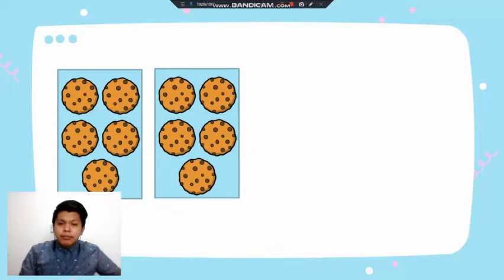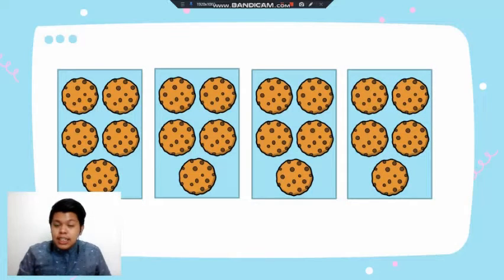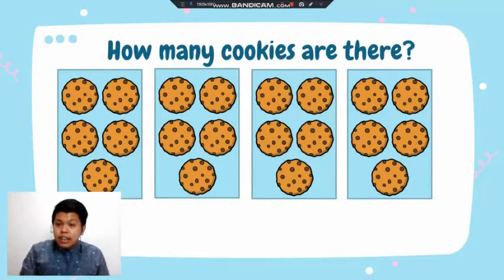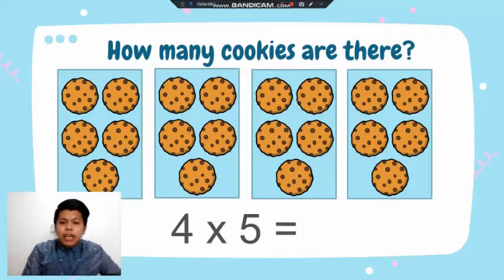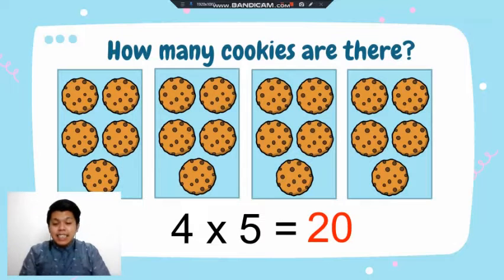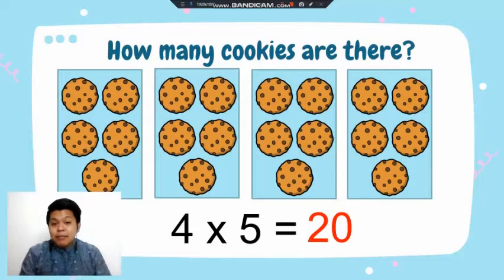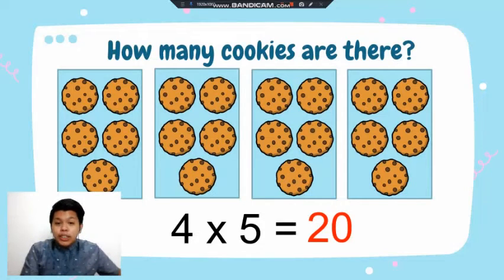Now I have here four boxes, each with five cookies. Remember, count first the boxes or the sets or the groups — we have four boxes, and each box contains five cookies. Even if we change the factors — four times five or five times four — you will still get the same answer, because in the properties of multiplication we have the commutative property.